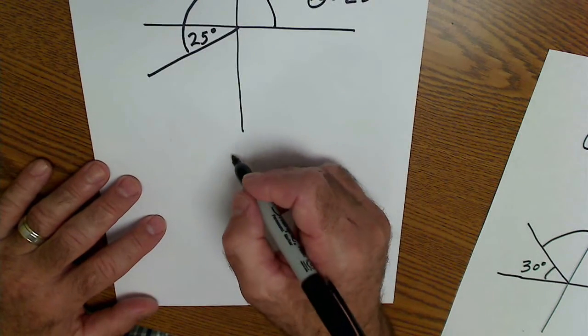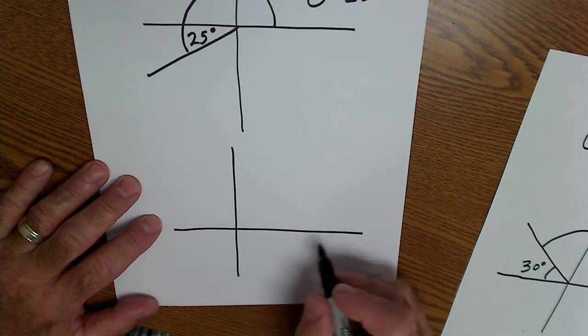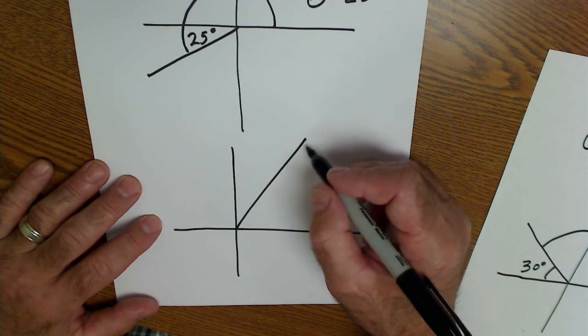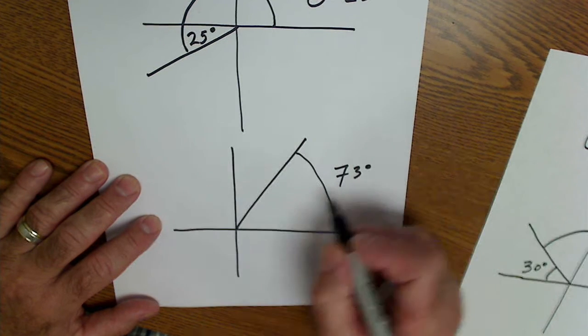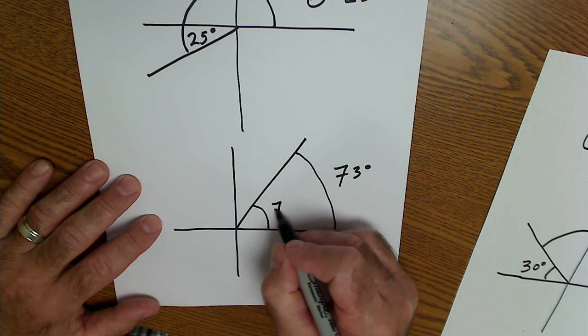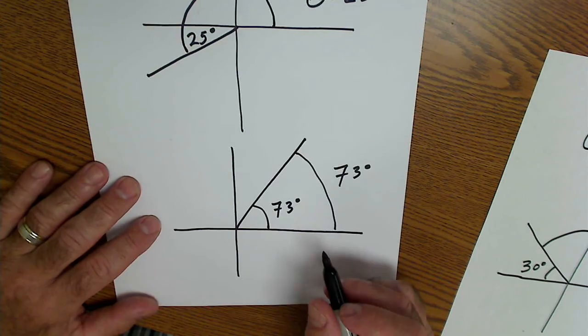If I'm in the first quadrant, my angle and my reference are the same. So if my angle is 73 degrees, my reference as well is 73 degrees.